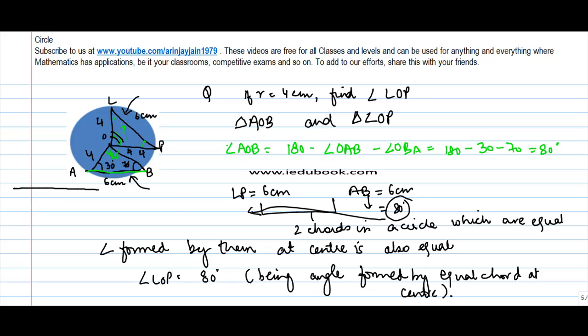And if you want, you could have done this by proving that both the triangles are congruent. Let's see. So in triangle AOB and LOP, we notice that OL is equal to OA and OP is equal to OB.